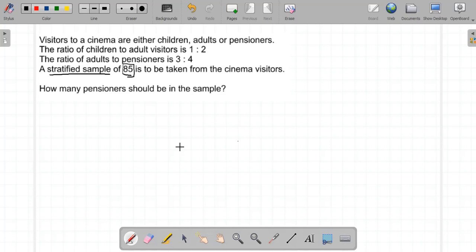Assalamu alaikum. Today's video is on a question on stratified sampling. Let's quickly get started. Visitors to a cinema are either children, adults, or pensioners. The ratio of children to adult visitors is 1:2.